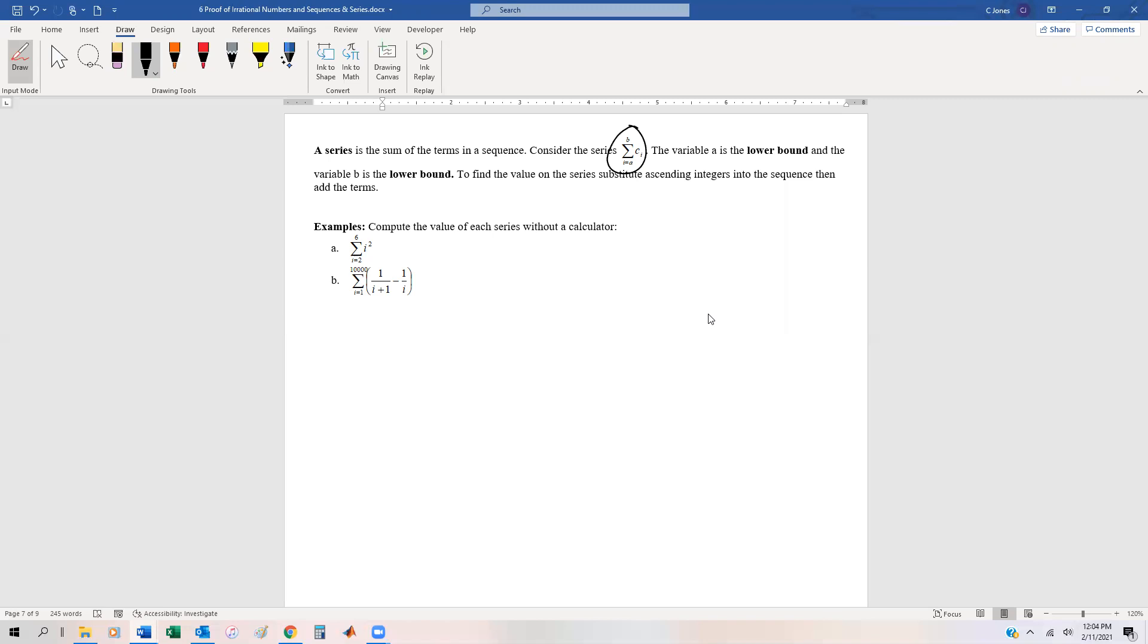We're going to put these in ascending order and substitute and evaluate. For instance, a pretty easy one is this first one where we have the sum of squares between two and six. So a in this case is two, b is six, upper and lower bound. This is going to be equal to two squared plus three squared plus four squared plus five squared plus six squared.